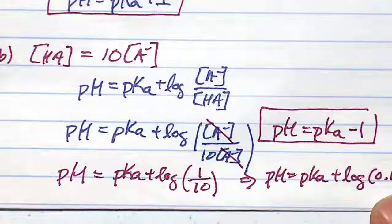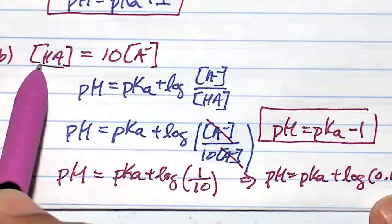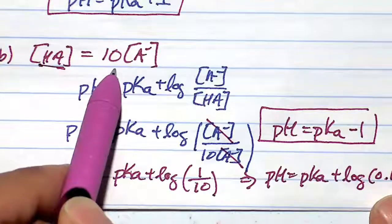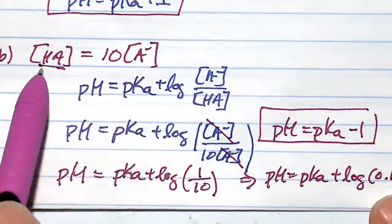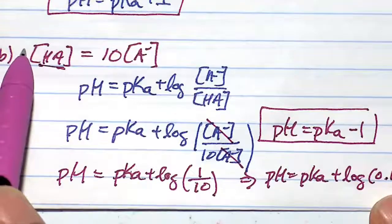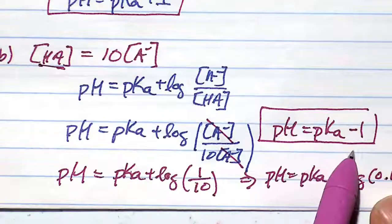Finally, in this situation, if you have 10 times the amount of acid, so the acid is 10 times the amount of conjugate base, your pH only goes down by one unit.